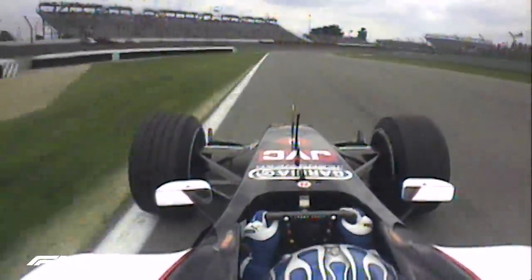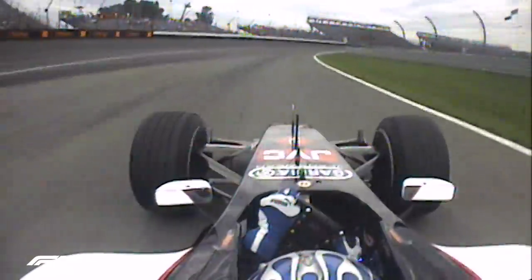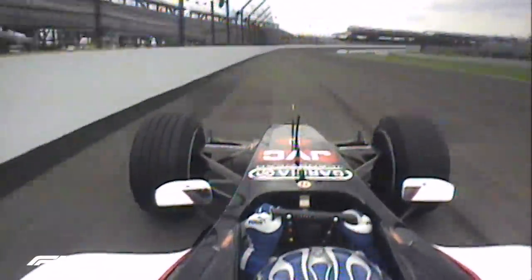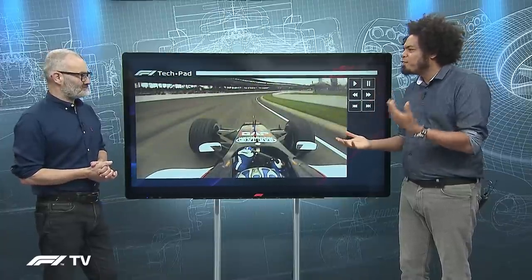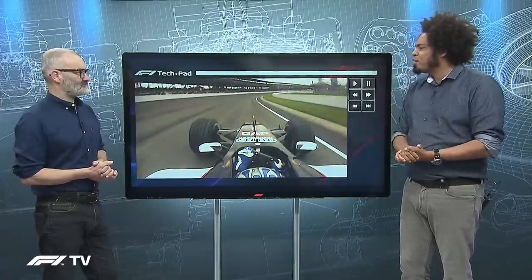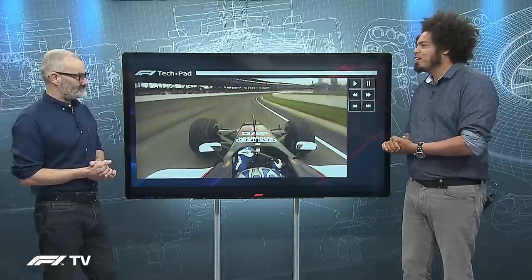We've seen the effect of that at Indianapolis in 2005 as well, how difficult it is for a modern Formula One car to go through a banked corner. Joining me to talk a little bit more in detail about the effects of banking on Formula One cars is Craig Scarborough. Craig, you've been looking into this in a bit more detail, and what the effects on a modern Formula One car through a banked corner really are.